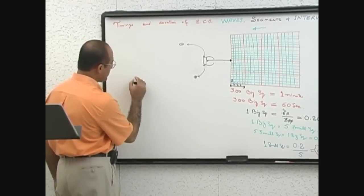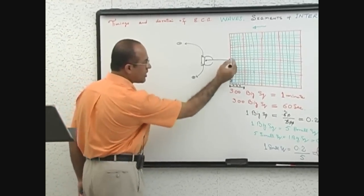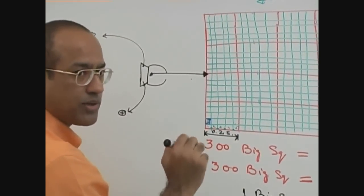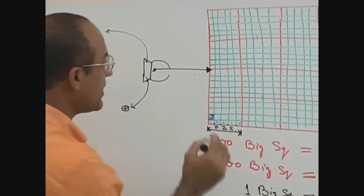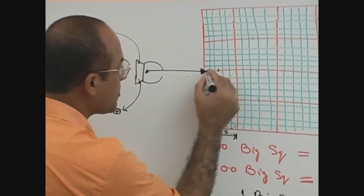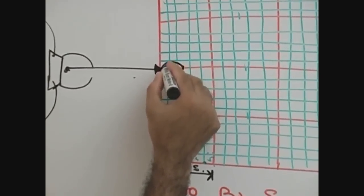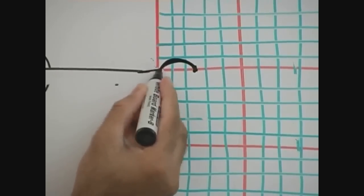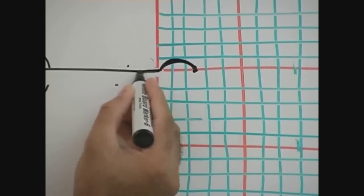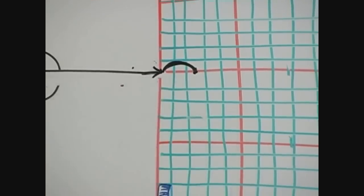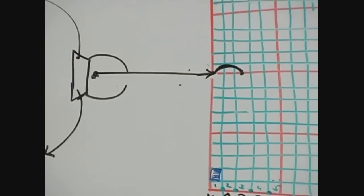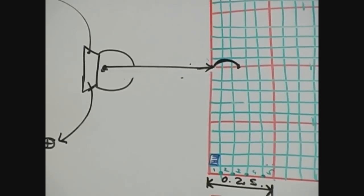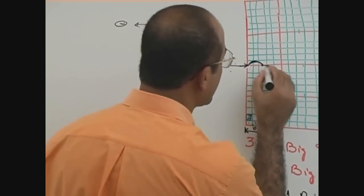You know this ECG pattern — I will draw it. The needle starts forming the ECG. First of all, which wave will come? P wave. The P wave takes 2 and a half small squares. After that, there is the PR segment, which is also 2 and a half small squares.